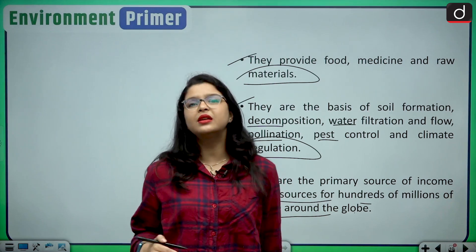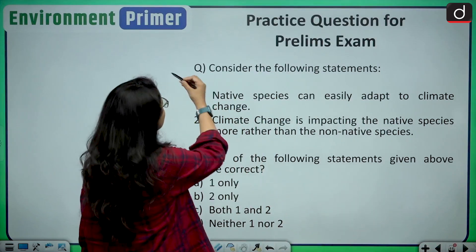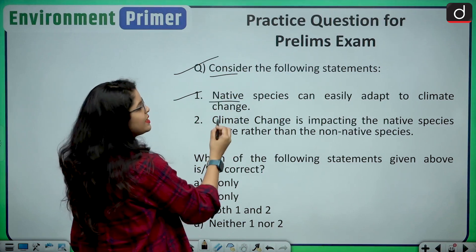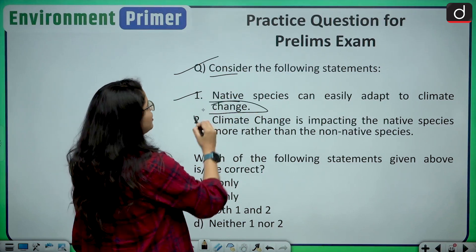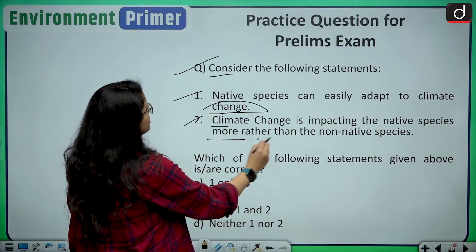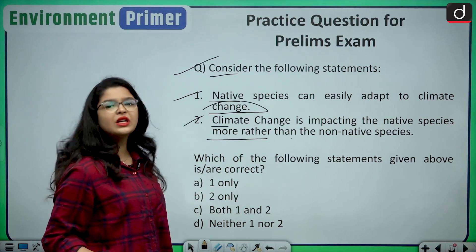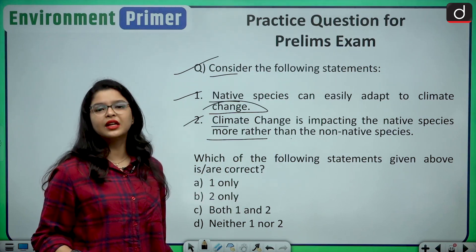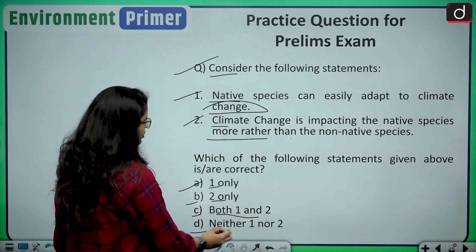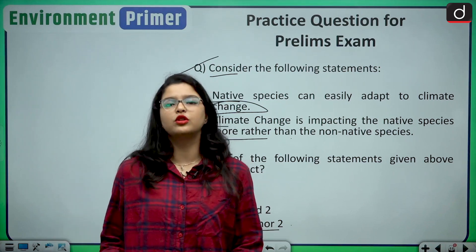Now let us discuss a practice question for your prelims examination. Consider the following statements: Statement one — native species can easily adapt to climate change. Statement two — climate change is impacting native species more than non-native species. Which of the following statements are correct? Option A: one only. Option B: two only. Option C: both one and two. Option D: neither one nor two. Kindly drop your answers in the comment box below.